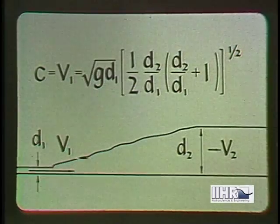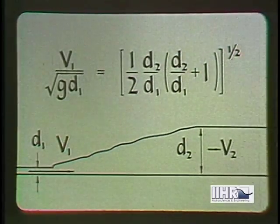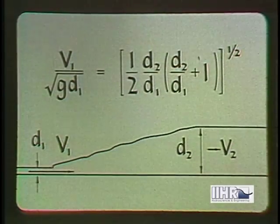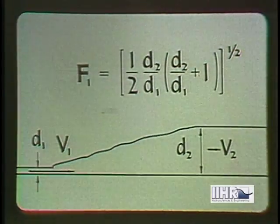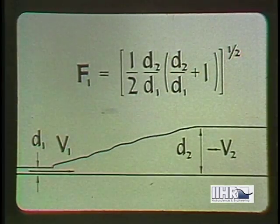In fact, the equation for the surge celerity, which now equals the velocity of the oncoming flow, can be written in terms of the Froude number. Evidently, F equals 1 when d2 equals d1.